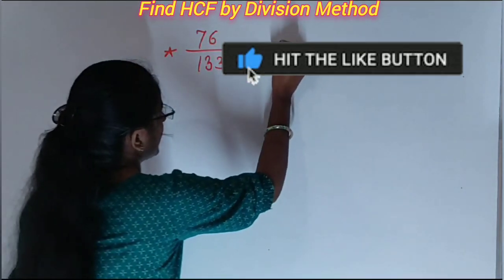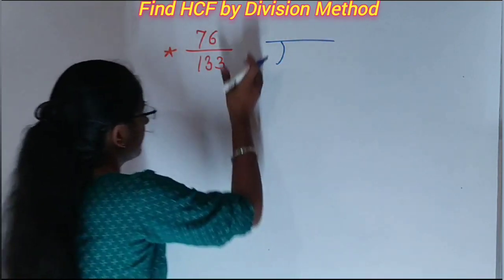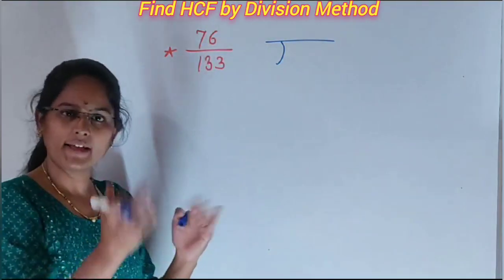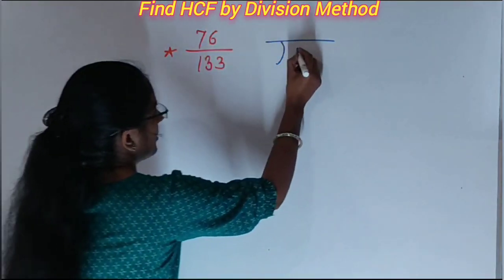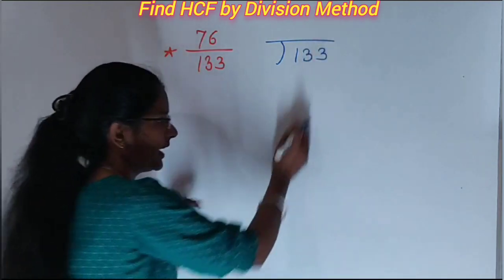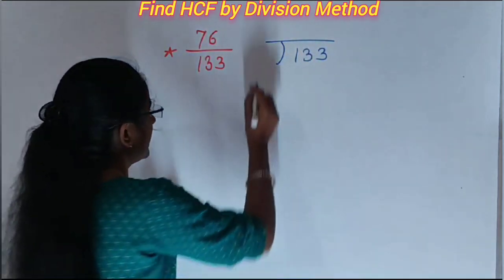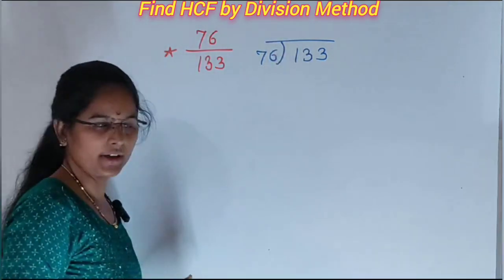Find the HCF of this number by using the division method. For that we divide the bigger number by the smaller number. Then write here the bigger number and here the smaller number.